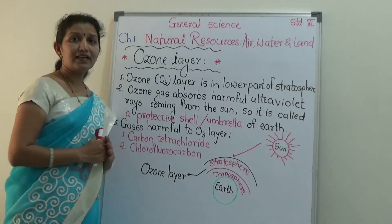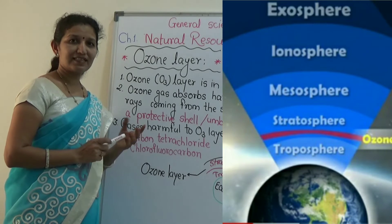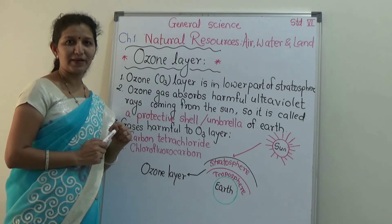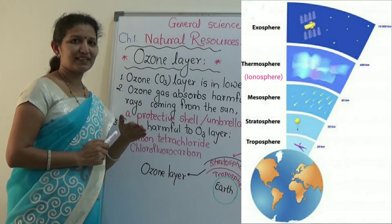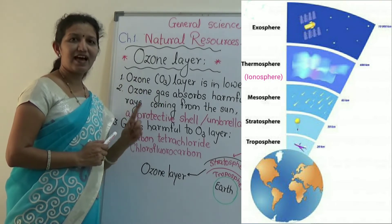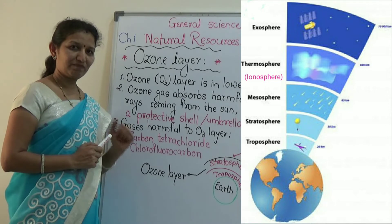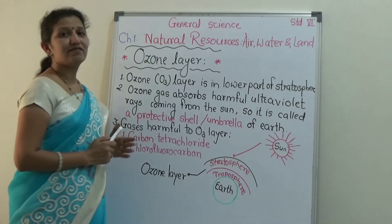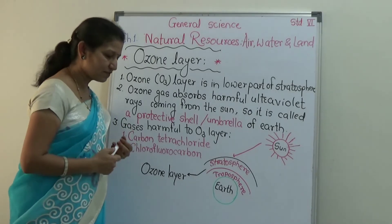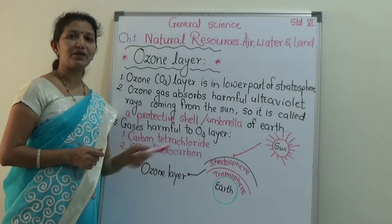We have studied the five layers of the atmosphere. There is one sentence for that: T for troposphere, S for stratosphere, M for mesosphere, I for ionosphere — ionosphere is also called thermosphere — and exosphere. Today we are going to study a very important layer: the ozone layer, which is present in this atmosphere.